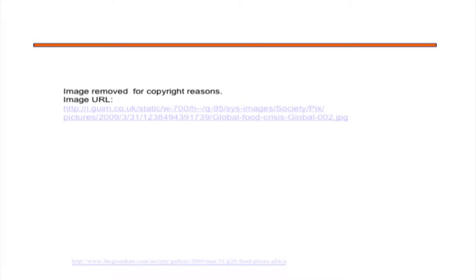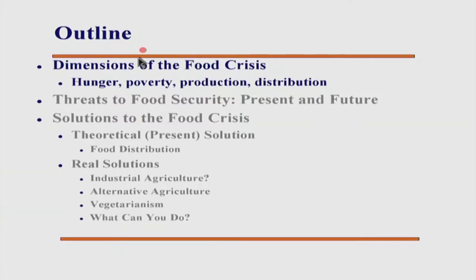This picture shows the plight of a woman who is unable to feed her family because food prices went up by as high as 600 percent, forcing her to feed her children wild cabbage. The outline of this talk will cover the various dimensions and problems in the area of food, including hunger and poverty.